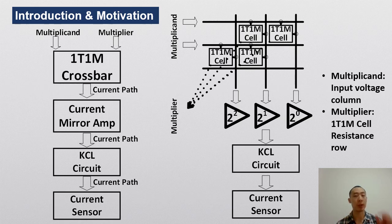As the figure on the right side shows, the multiplicand is the input voltage column. The multiplier is the 1T1R cell resistance row. All the current characters are defined as follows. High input voltage in multiplicand is the logic of 1. The low case is the logic of 0. High 1T1R cell resistance is the logic of 0. The low case is the logic of 1.